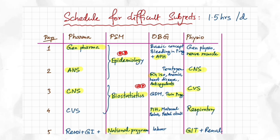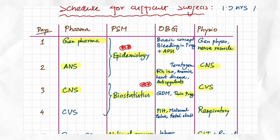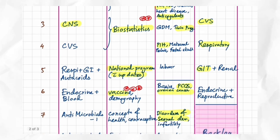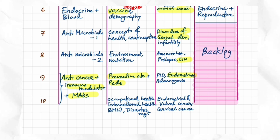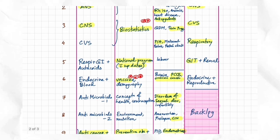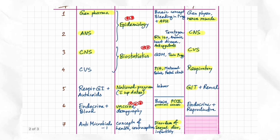In Pharma, I've allotted General Pharma on Day 1, ANS on Day 2, CNS on Day 3, then CVS likewise. On Days 9 and 10 I've allotted anti-cancer agents, immunomodulators, and monoclonal antibodies — I've highlighted the most important topics for INI-CET. In PSM, I've allotted two days for Epidemiology and two days for Biostatistics, as these two chapters carry maximum weightage.